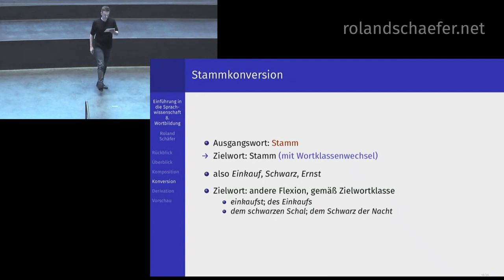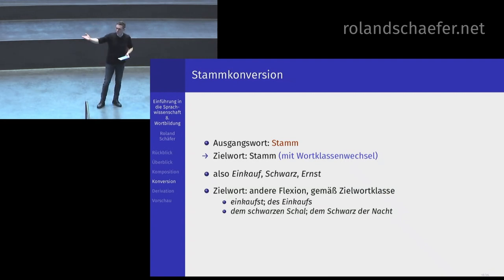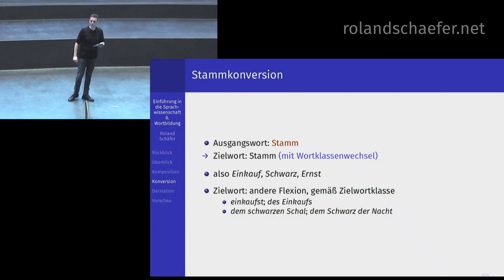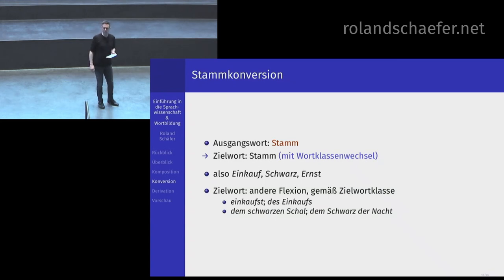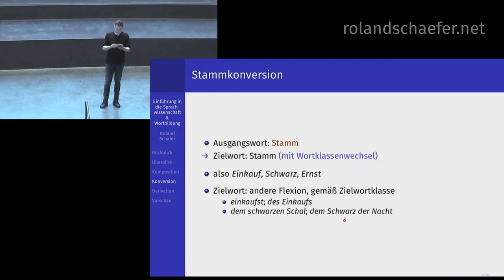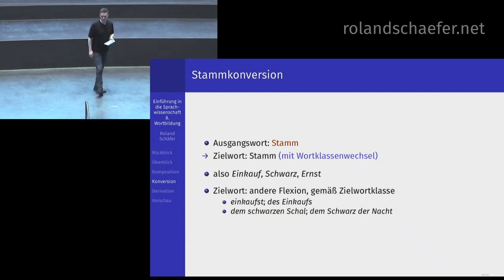Das Zielwort hat dann eine ganz andere Flexion gemäß der Zielwortklasse. Einkaufst – das flektiert anders als der Einkauf. Der Einkauf hat plötzlich einen Genitiv, das Verb hatte keinen Genitiv. Dafür hat das Verb eine zweite Person Singular Präsens, der Einkauf hat keine zweite Person Singular Präsens. Dem schwarzen Schal – Schwarz flektiert hier, wie letzte Woche besprochen, wie ein Adjektiv. Dem Schwarz der Nacht – auch ein Dativ, aber Schwarz flektiert ganz anders, das flektiert wie ein ganz normales neutrales Substantiv.